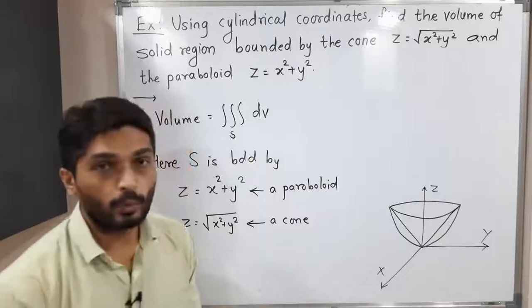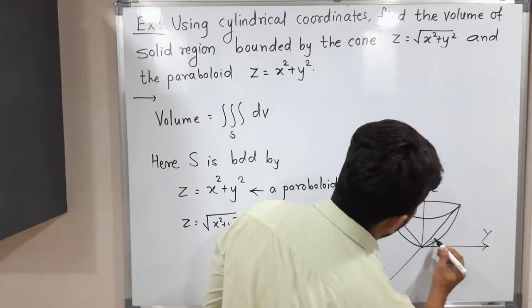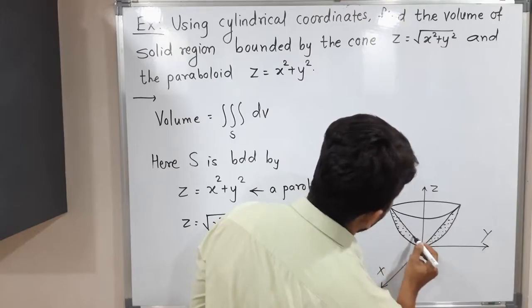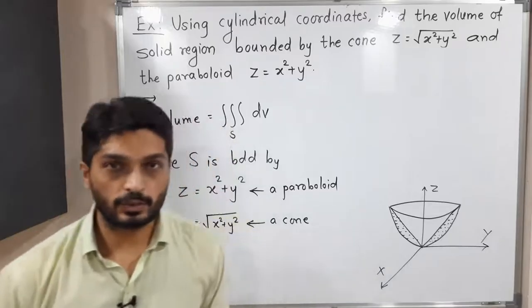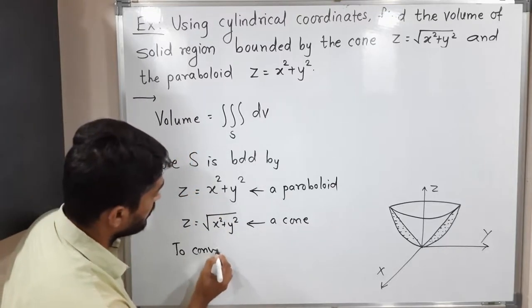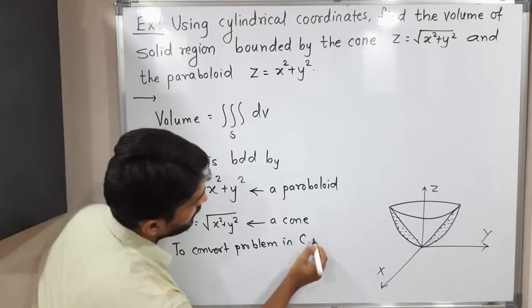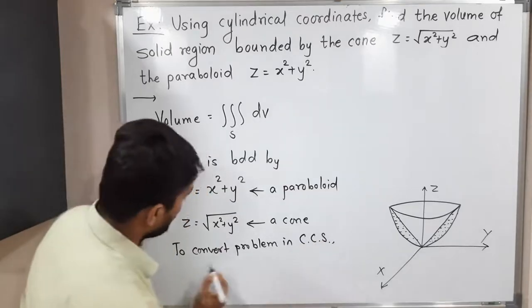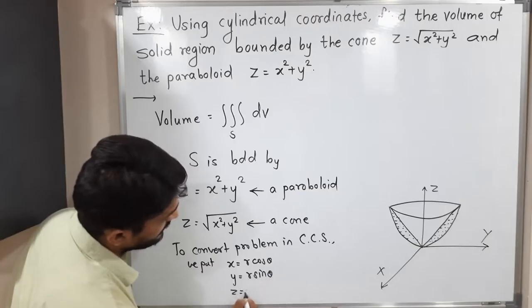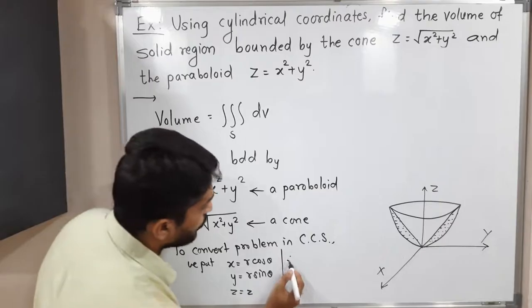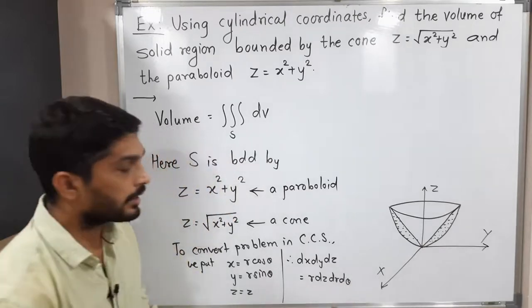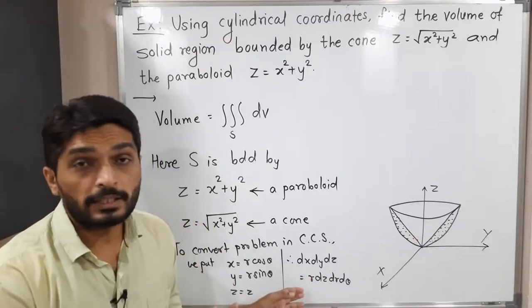The region S is bounded by that cone and that parabola. We have to solve this problem using the cylindrical coordinate system. To convert to cylindrical coordinates, we put x equal to r cos θ, y equal to r sin θ, and z equal to z. Therefore, dx dy dz equals r dz dr dθ, where r comes from the Jacobian, which has value r.